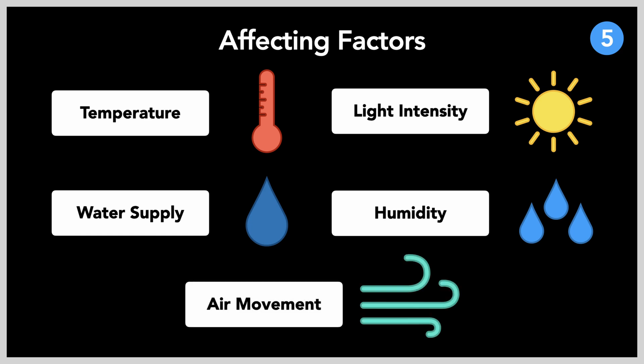And finally, air movement. Air nearer to the leaf will get saturated with water molecules as transpiration progresses. If the surrounding area is windy, dry air from the further surroundings will replace the humid air, and we know how humidity affects the rate of transpiration. The more air movement present, the faster the rate of transpiration.